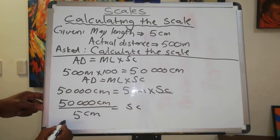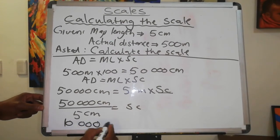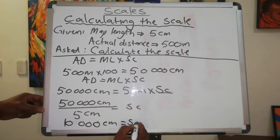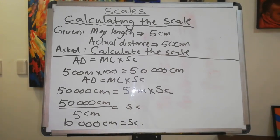And this is going to give us 10,000 centimeters equals the scale. Now, how do you write it as your final answer?